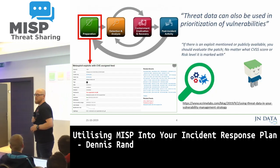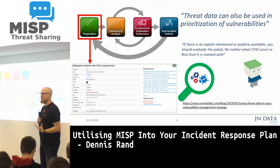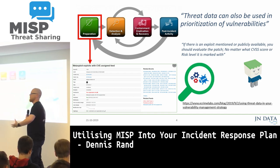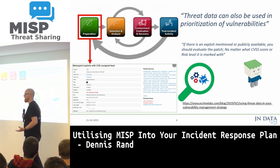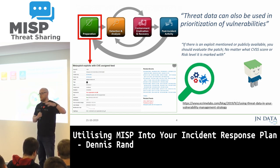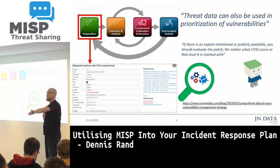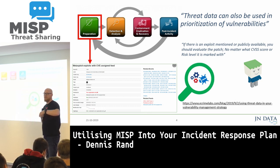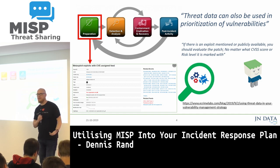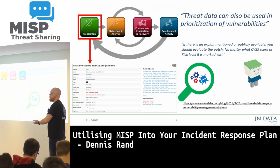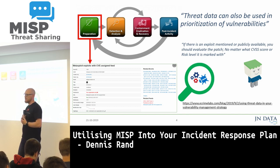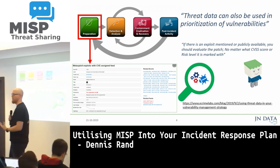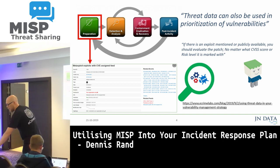The next thing was that we also started to use MISP with vulnerability management. If any of you have issues regarding prioritizing patches, some use CVSS scores and other things like that. What we tried to do was to start using CVE numbers that were mentioned or located in MISP. So if we had seen a vulnerability being exploited or mentioned in MISP, we used that in the prioritization phase to decide how we can counteract some of these attack types.